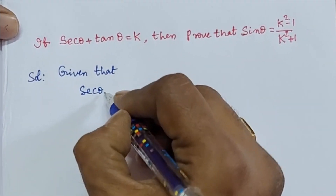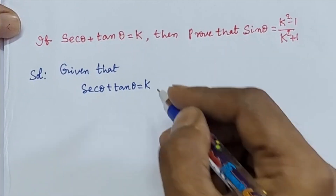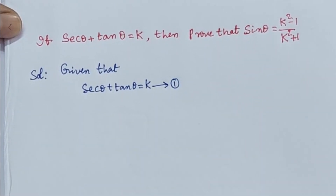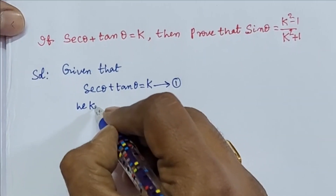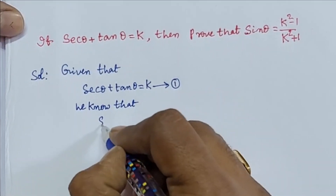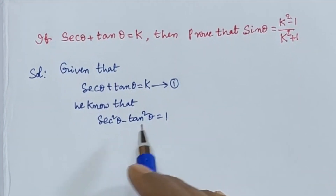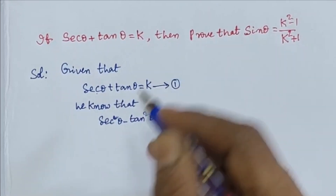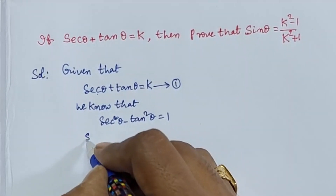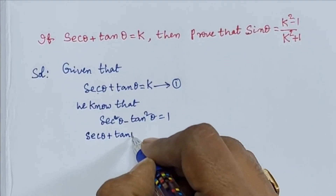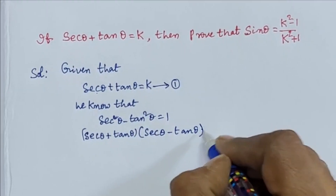Given that secant theta plus tan theta equals k — take this as equation 1. We already know the trigonometric identity: secant squared theta minus tan squared theta equals 1. This is in the form of a squared minus b squared, which equals a plus b into a minus b. So it becomes: secant theta plus tan theta into secant theta minus tan theta equals 1.